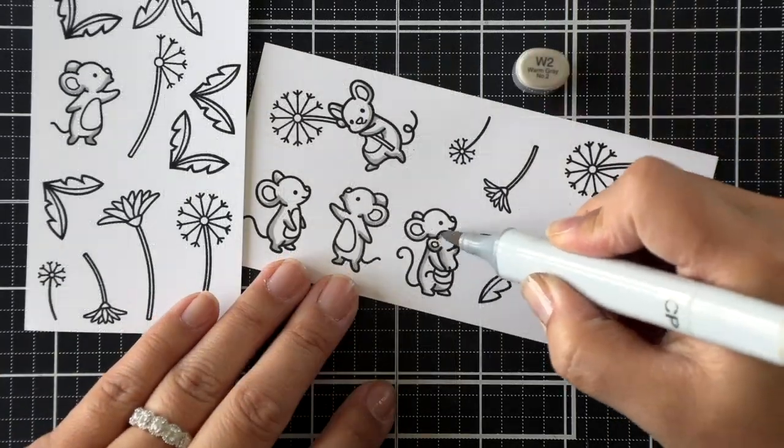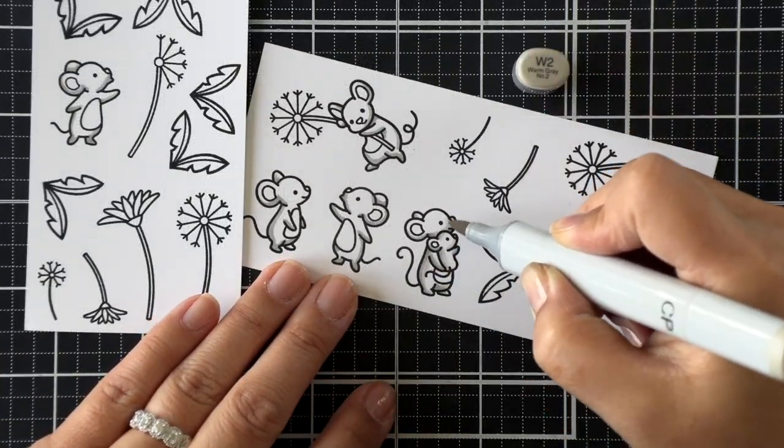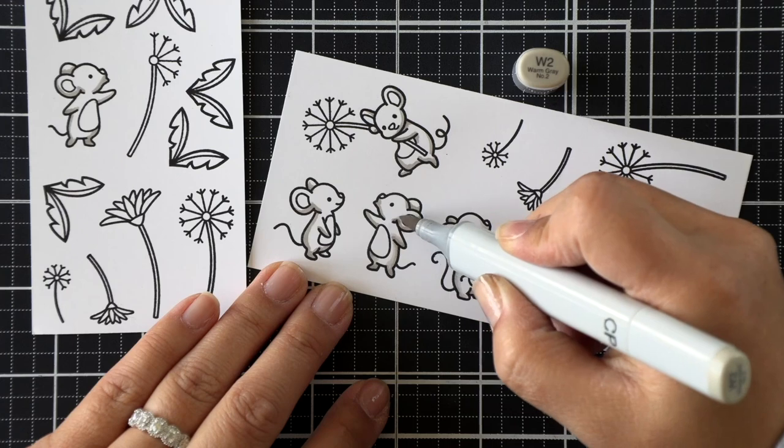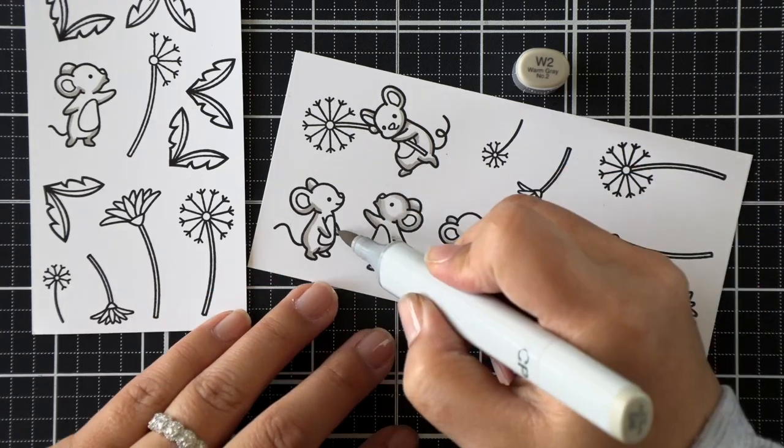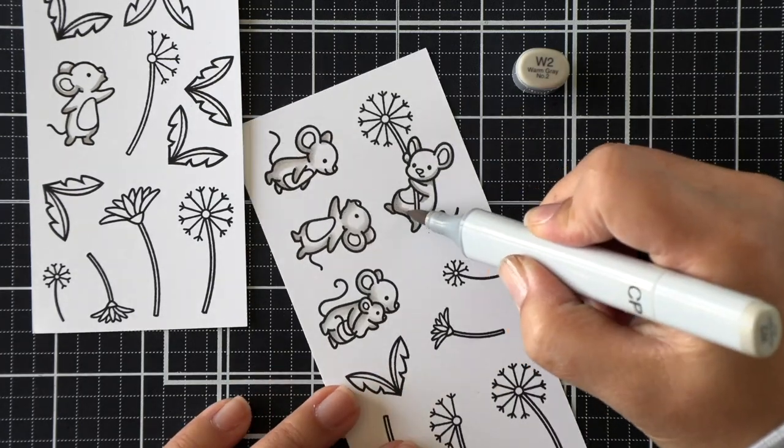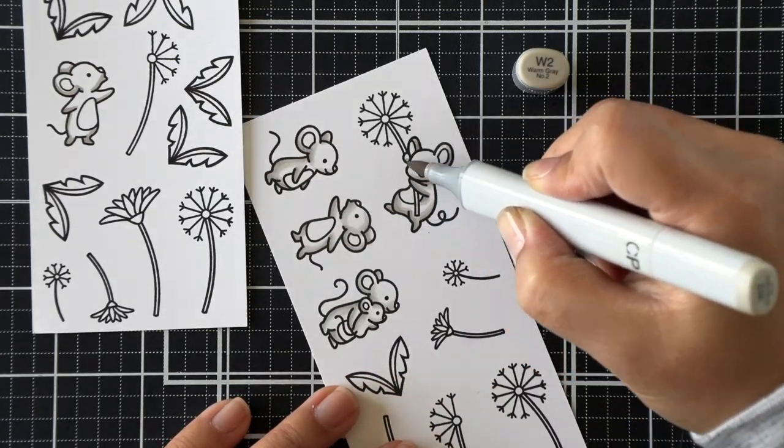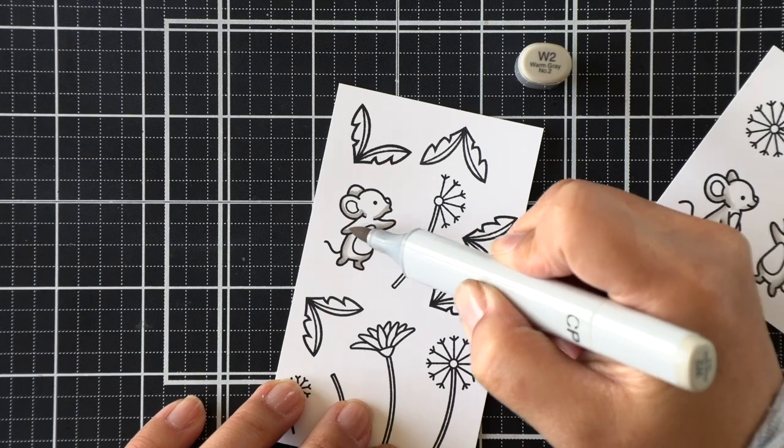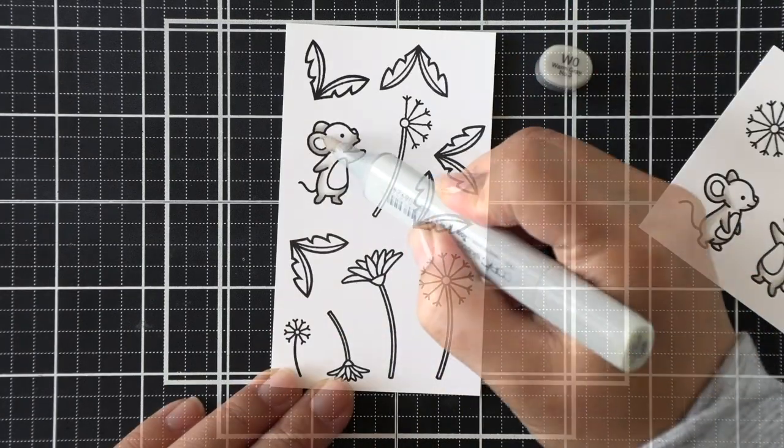I'm going to speed the coloring up just a bit, but you'll see the point here. I used W4 first for the darkest color, just highlighting the darkest areas where I want my shading to be. Then I blend that out just a bit with a W2, and then I'll fill in the rest of their bodies with the lightest shade in W0.